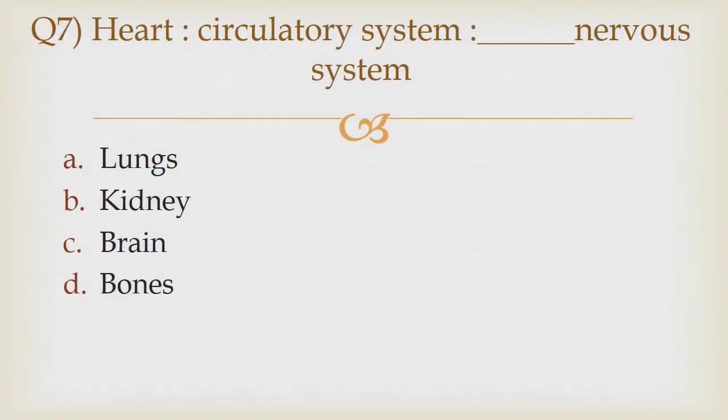Question number 7. If heart is to circulatory system, dash is to nervous system. Option A: Lungs. Option B: Kidney. Option C: Brain. Option D: Bones. The correct answer is option C: Brain.